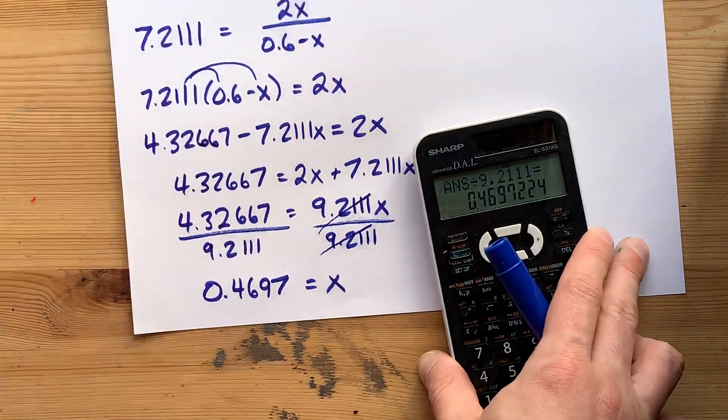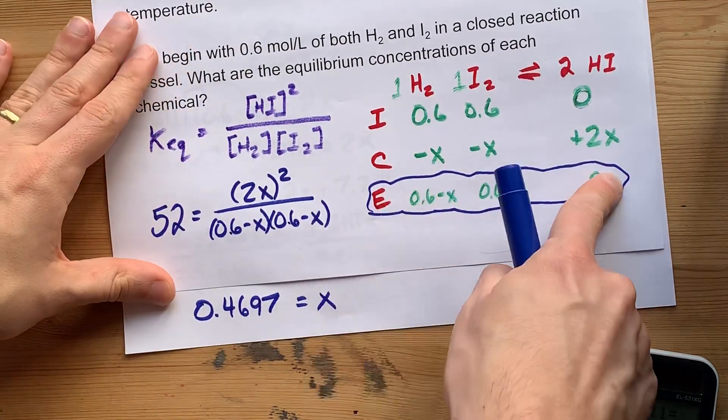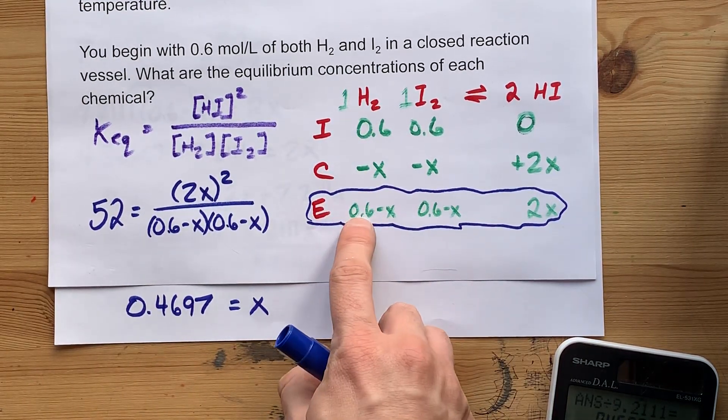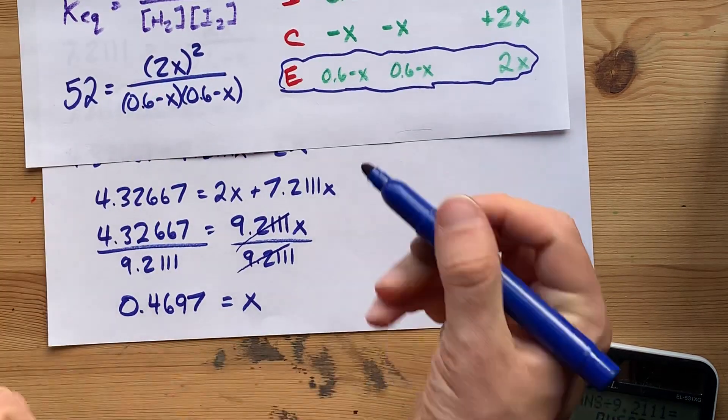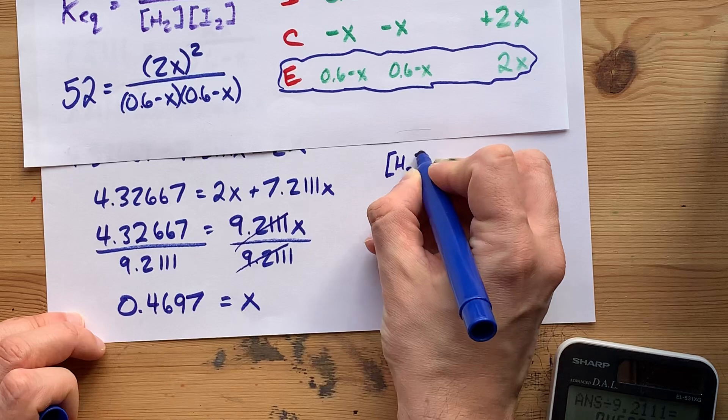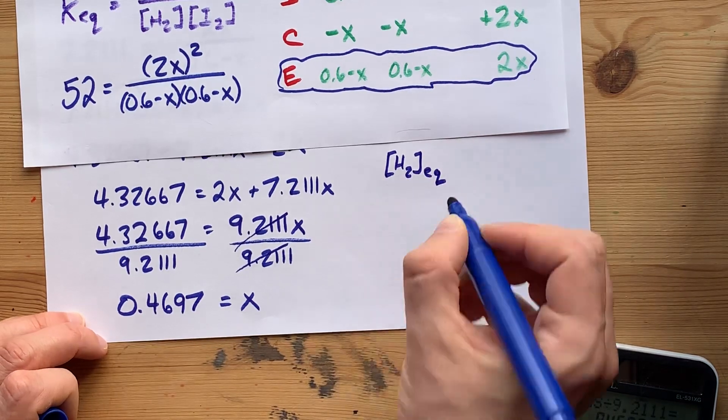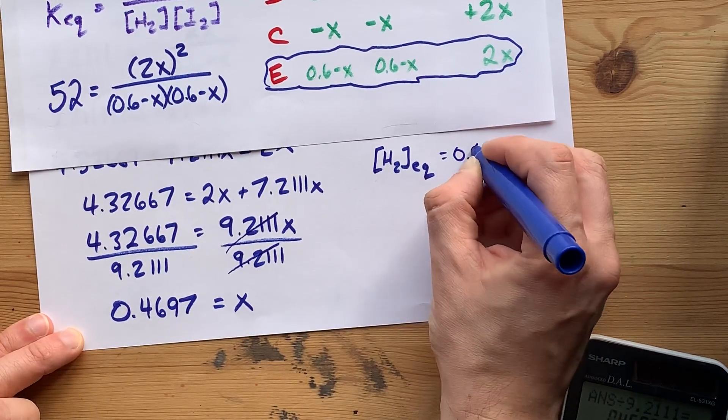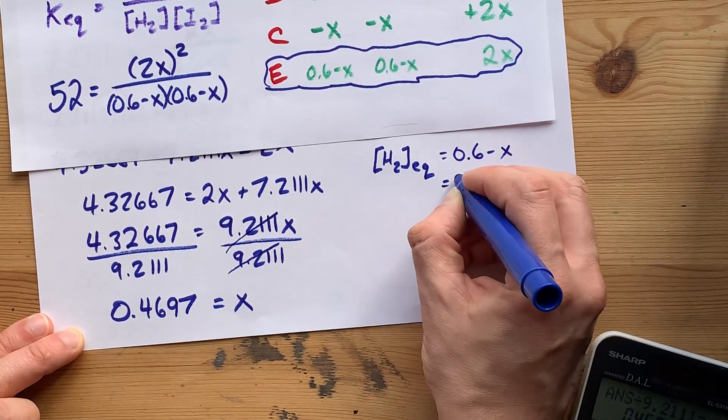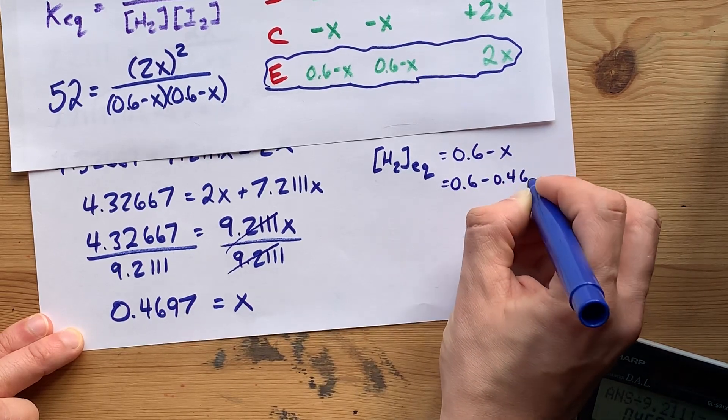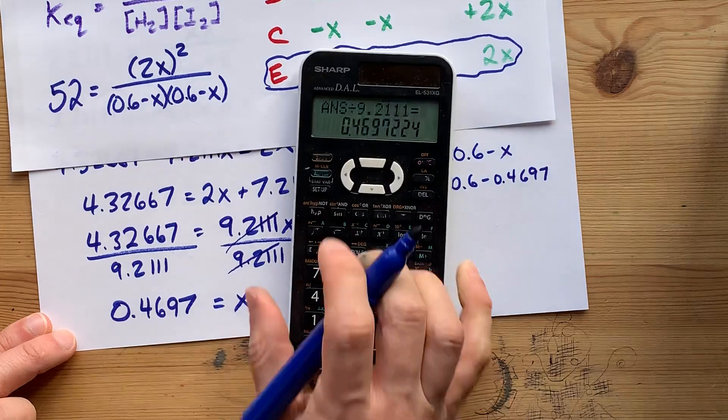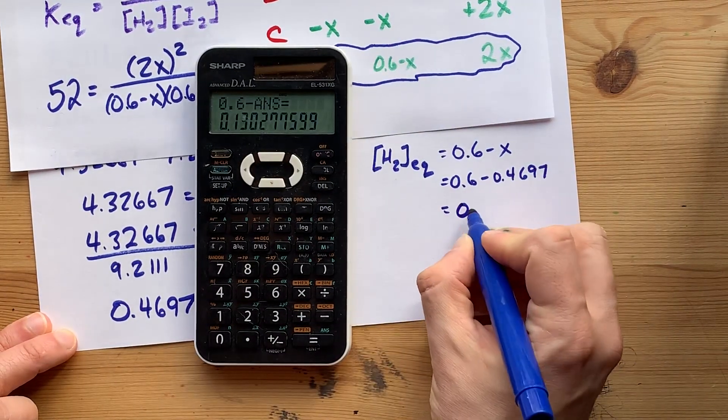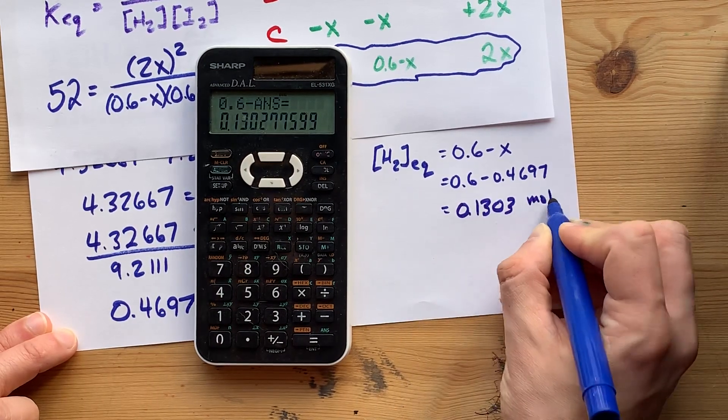So what does that mean? That means that in this chart, this ice table, the equilibrium concentration of H2 is 0.6 minus whatever that number is. The way teachers like you writing that out is H2 with a little subscript EQ at the bottom. That's the equilibrium concentration of H2. It's 0.6 minus X, which is 0.6 minus 0.4697. 0.6 minus that answer is 0.1303 moles per liter.